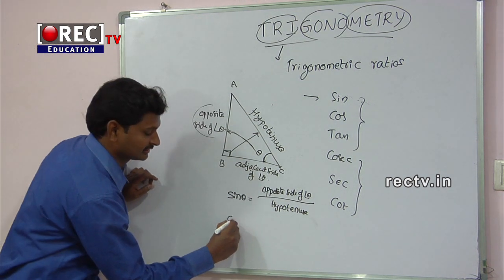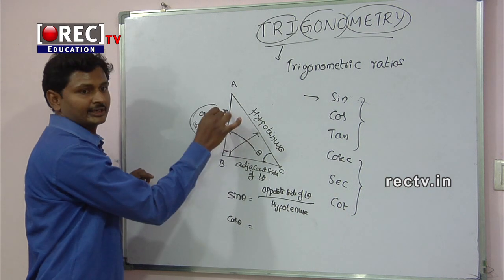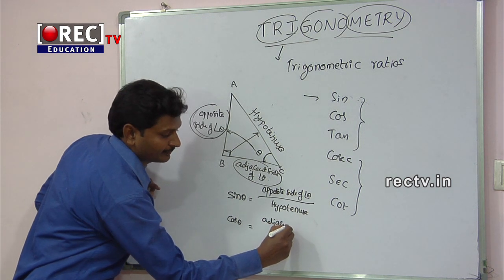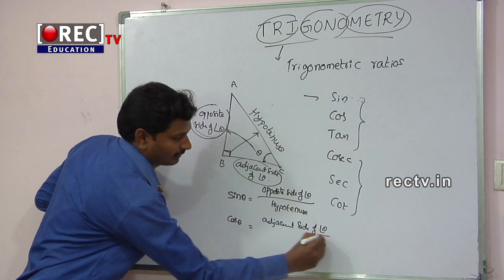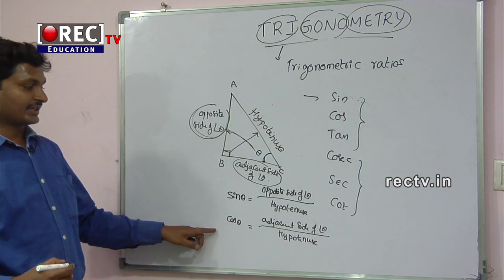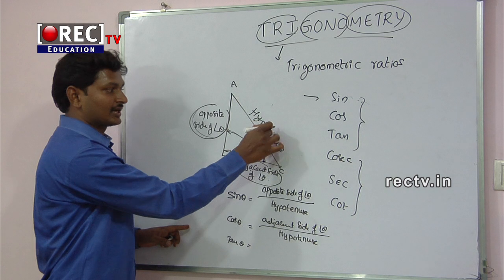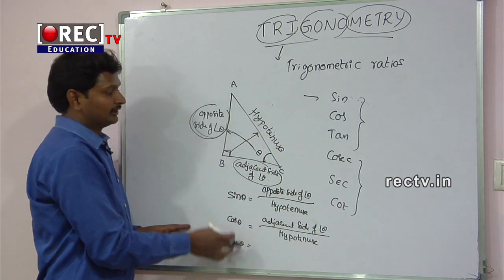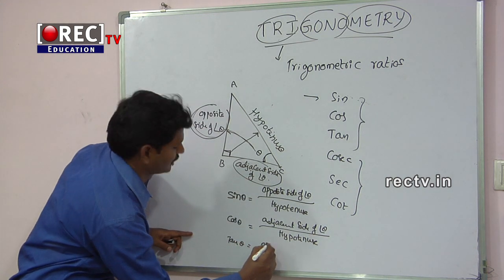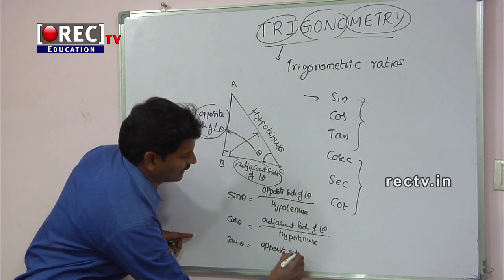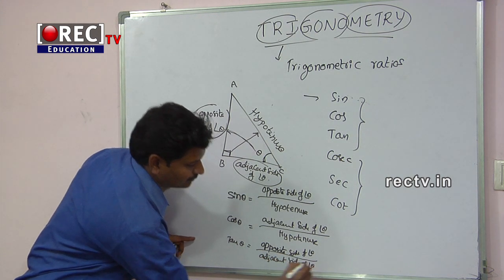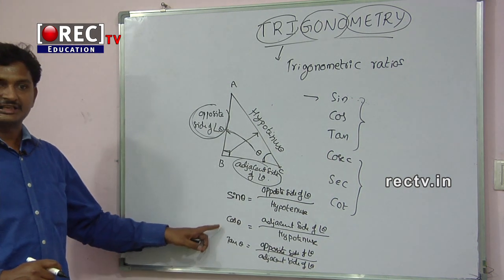The next Trigonometric ratio is cos theta. Cos theta is equal to the adjacent side of angle theta divided by hypotenuse. Third, tan theta: here we eliminate the hypotenuse. Tan theta is equal to the opposite side of angle theta divided by the adjacent side of angle theta. These are the first three Trigonometric ratios.